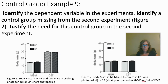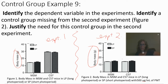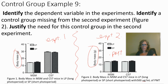The dependent variable is body mass on the y-axis. The question asks to identify a control group missing from the second experiment. In experiment two, PMT was given to all four groups — long and short photoperiod for both MSM and C57 mice — but there was no untreated comparison group.